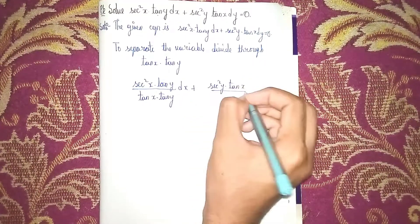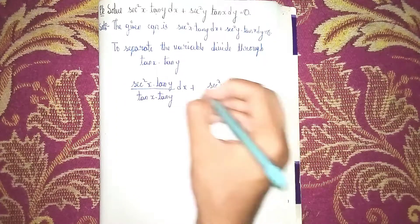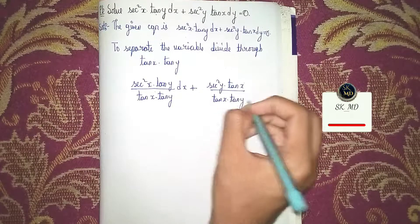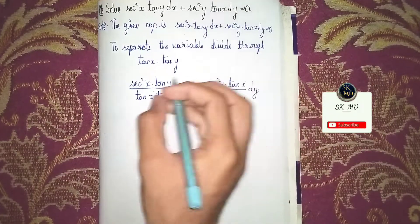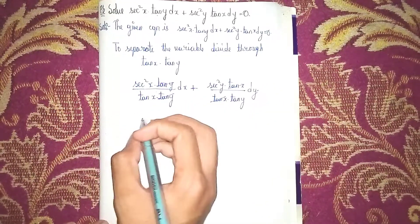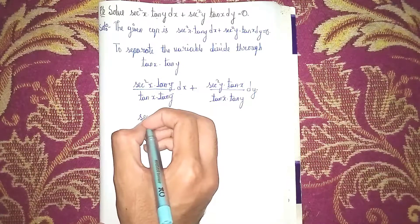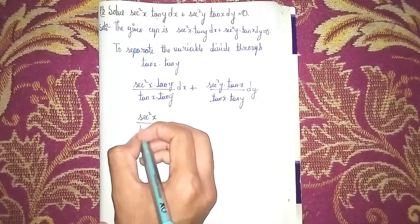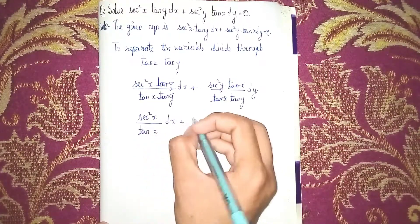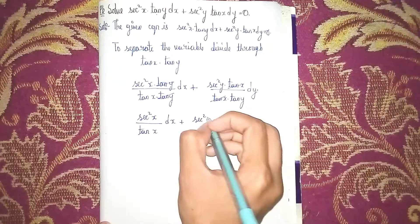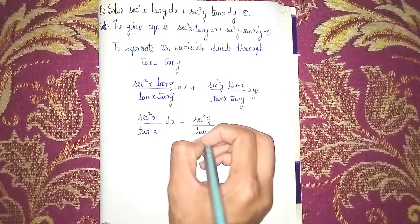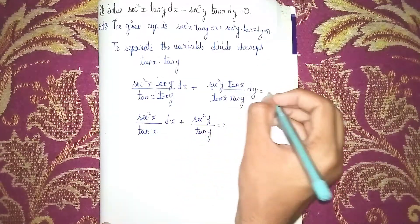After dividing by tan x times tan y, in the first term tan y cancels, and in the second term tan x cancels. What remains is secant squared x over tan x plus secant squared y over tan y, and this is equal to zero.